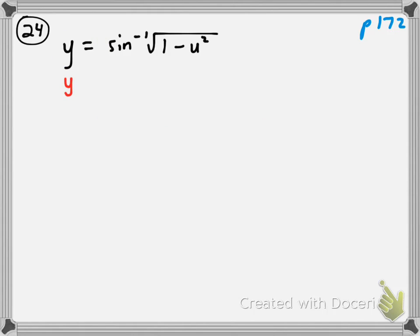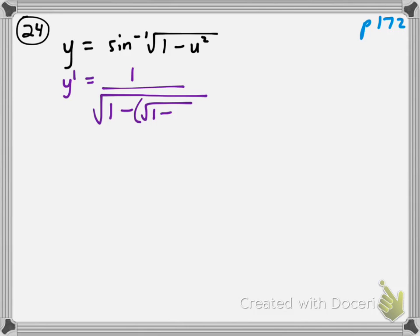y prime equals the derivative of the inverse sine, which is 1 over the square root of 1 minus whatever that is — 1 minus u squared — multiplied by du/dx.